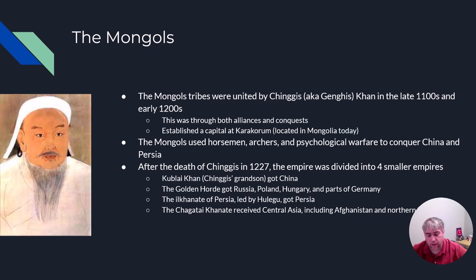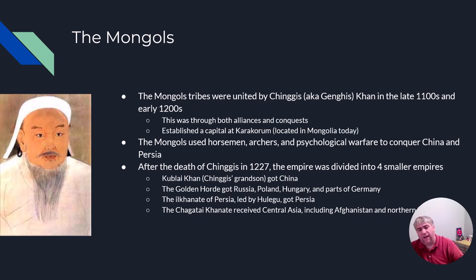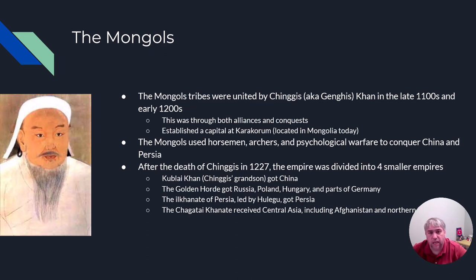The Mongol tribes were united in the late 1100s by Genghis Khan — his real name is Chinggis Khan, but we've made it say Genghis these days. Originally he was known as Temujin, and conservative estimates state that Genghis Khan was responsible for mass exterminations, famines, and the direct death of nearly 20 million civilians. He also has over 20 million living descendants, which is about 0.5% of the entire world's population.